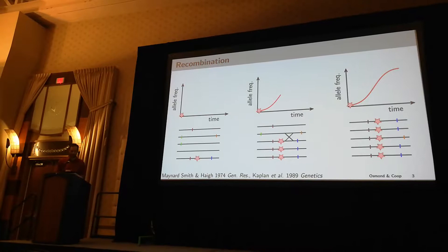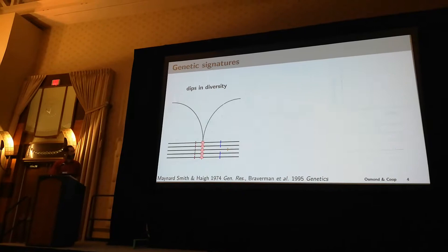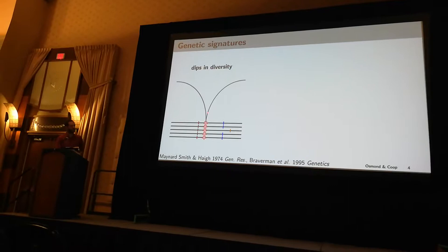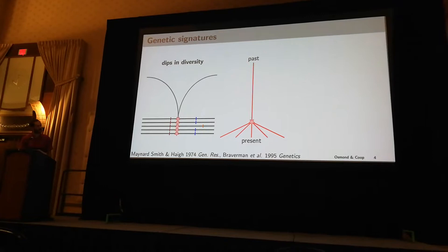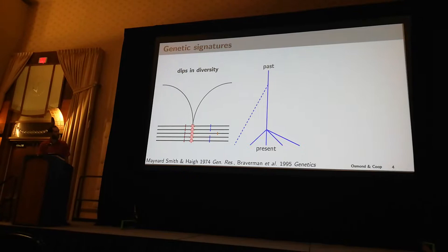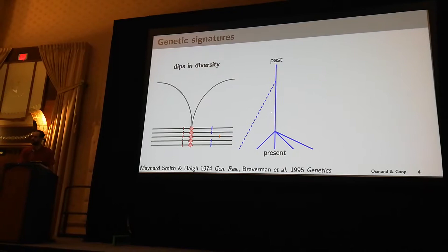Now in populations where there's more recombination, not all genetic diversity is lost, because recombination exchanges genetic backgrounds between haplotypes. Here we see the loss of genetic diversity at the selected site, but then this recovers, creating these characteristic dips in diversity. At the selected site, we see these very star-like genealogies, where sampled alleles in the present day all quickly coalesce back to the beneficial mutation, whereas recombination allows alleles linked to neutral sites to coalesce further back in the past.